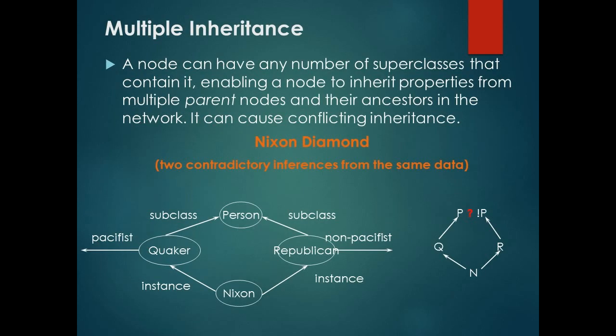Multiple inheritance. A node can have any number of superclasses that contain it, enabling a node to inherit properties from multiple parent nodes and their ancestors in the network. It can cause conflicting inheritance, Nix and Diamond: two contradictory inferences from the same data. An example is shown in the figure.